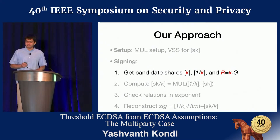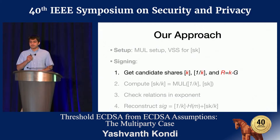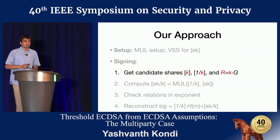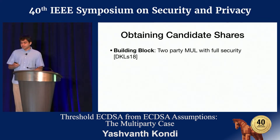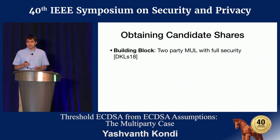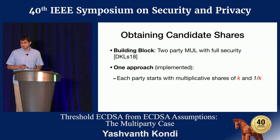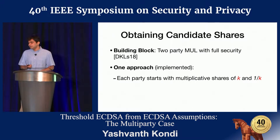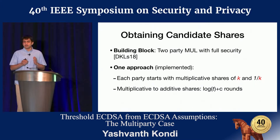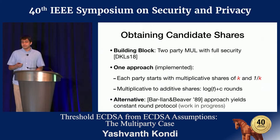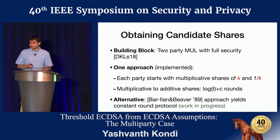The first step of signing is to get candidate shares for the instance key K, its inverse, and K in the exponent — which is just the signing nonce. The building block we use is the two-party multiplier with full security from last year with some optimizations. One approach to get candidate shares for K and its inverse is to have each party start with multiplicative shares and run a conversion protocol to get additive shares — costing rounds logarithmic in the number of parties. Alternatively, we could use the Barlan and Beaver approach for a constant-round protocol, which we're working on for our journal version.